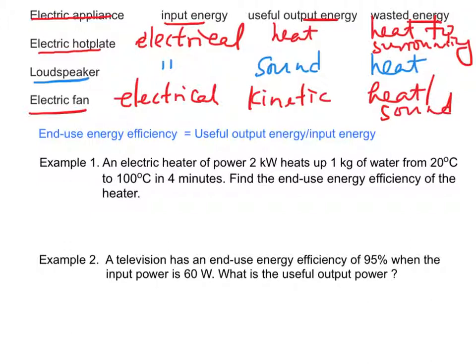For an electrical appliance, we have end-use energy efficiency, which is defined as the ratio of useful output energy over input energy times 100%.